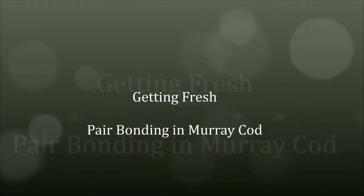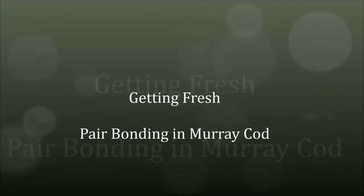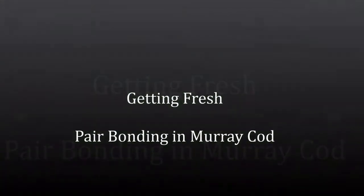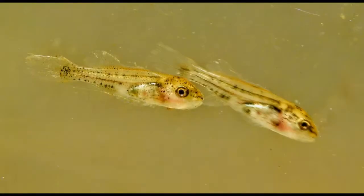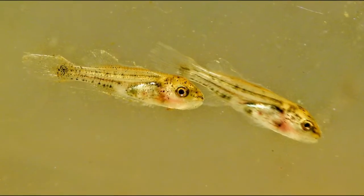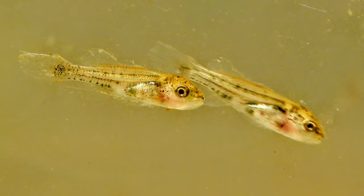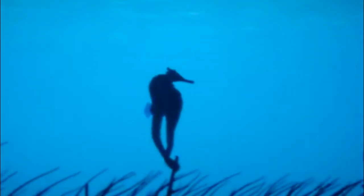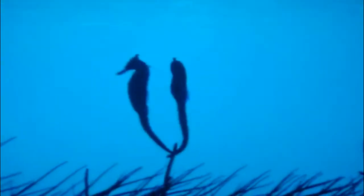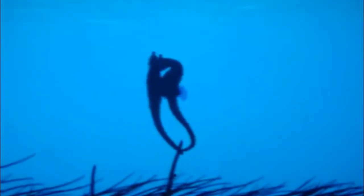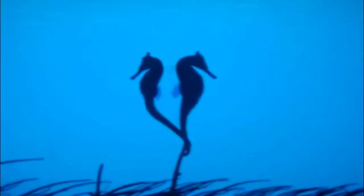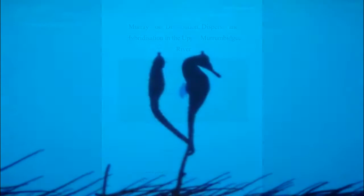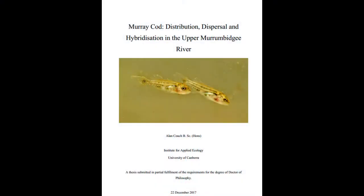The phenomenon of pair bonding is well known in mammals, birds, reptiles and even some amphibians. It is one of a set of mating strategies that evolution has generated to ensure persistence of genes by generating more of the species with those genes.